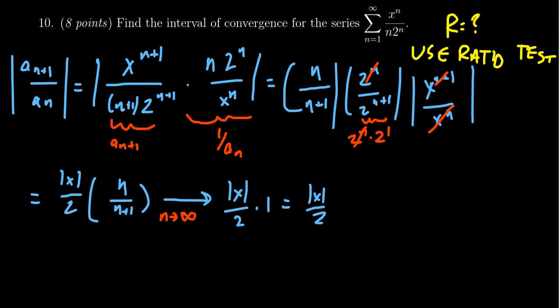For convergence, the ratio test expects this to be less than 1. So if the absolute value of x over 2 is less than 1, solving for the absolute value of x gives absolute value of x is less than 2. This is our radius of convergence. The radius of convergence equals 2 for this exercise.